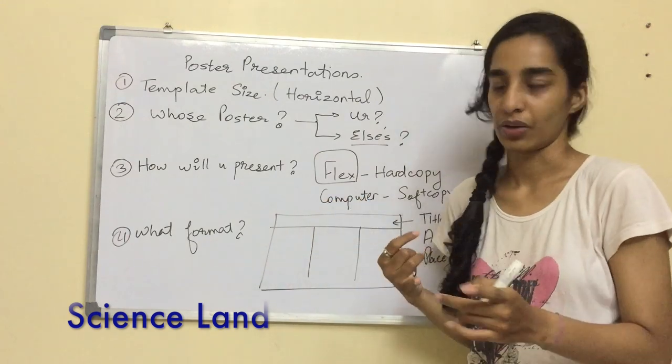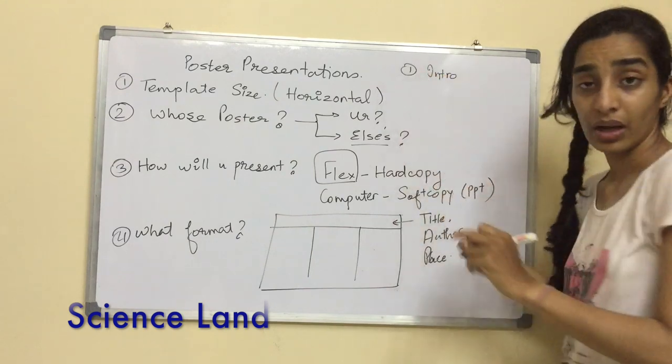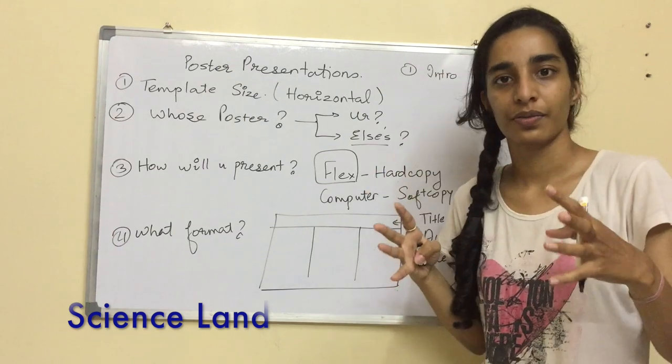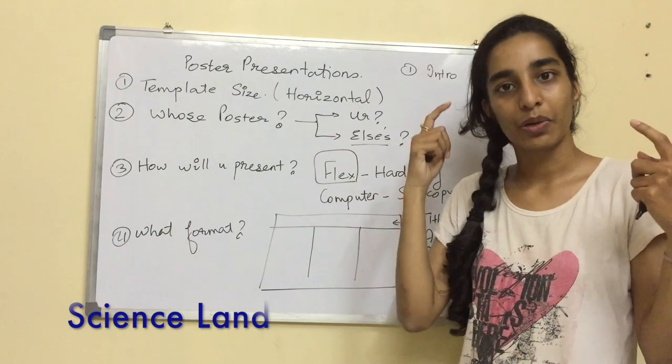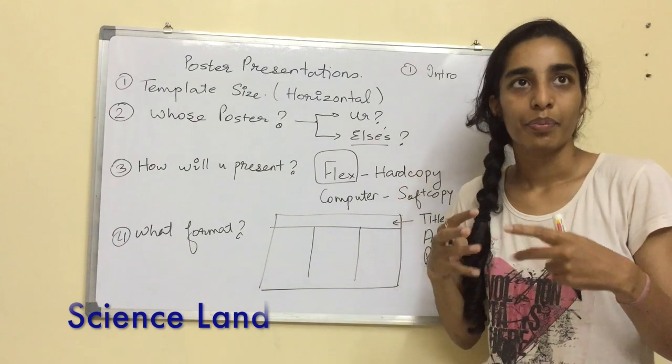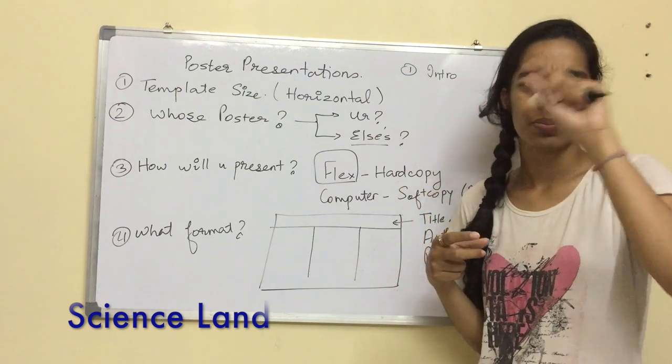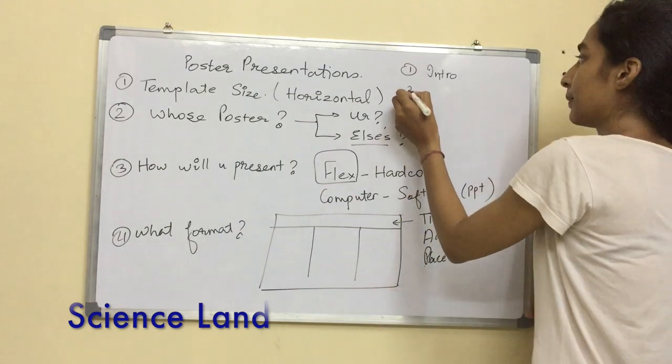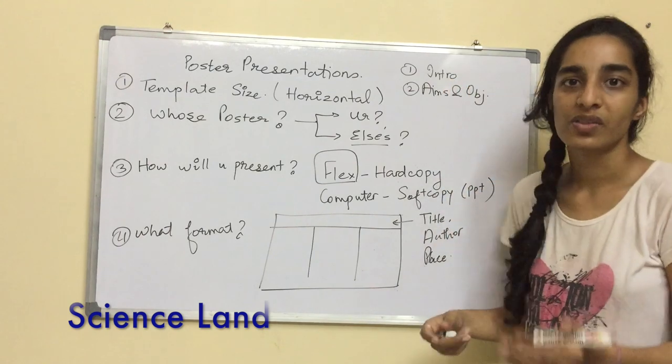The first column is introduction. Just give a gist about the research. You don't need to put in lots and lots of data. Since it is a presentation, that should be constantly in your brain—not to add too much data. Put in more images if you possibly can about the introduction. If not, just make small bullet points and finish that introduction off.